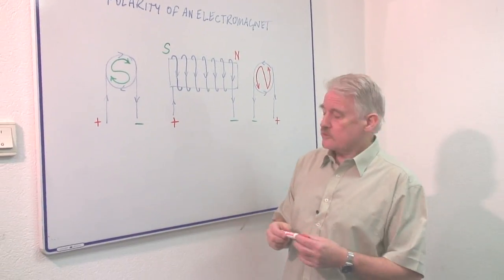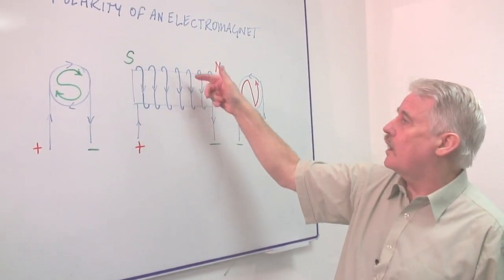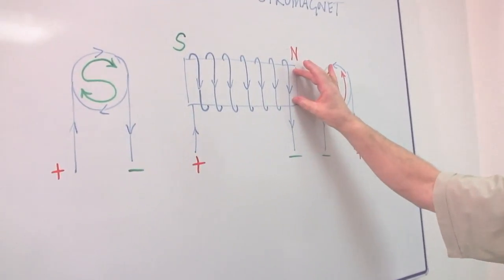Now this is our electromagnet and you can see it is a coil of wire wrapped around some kind of cardboard former.